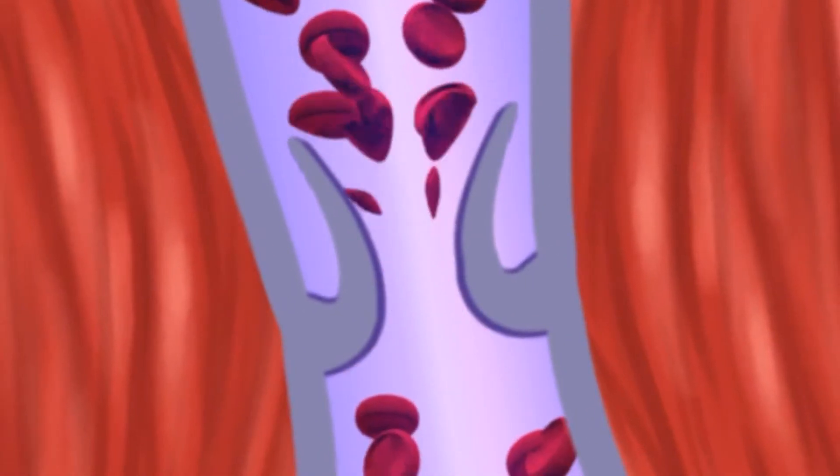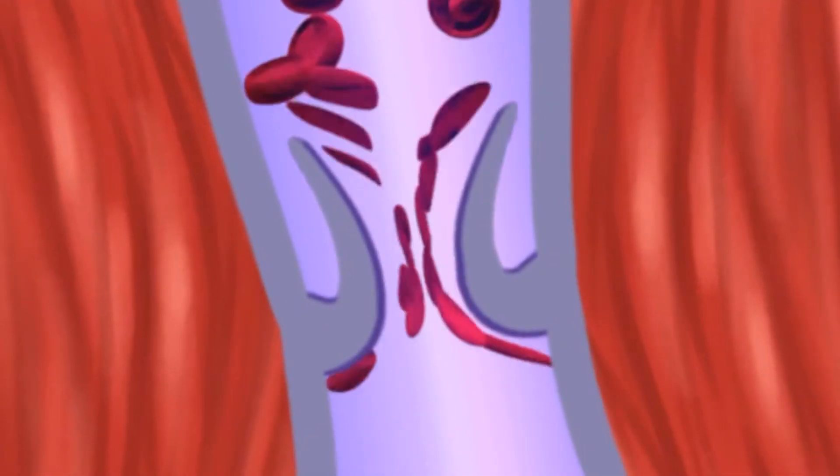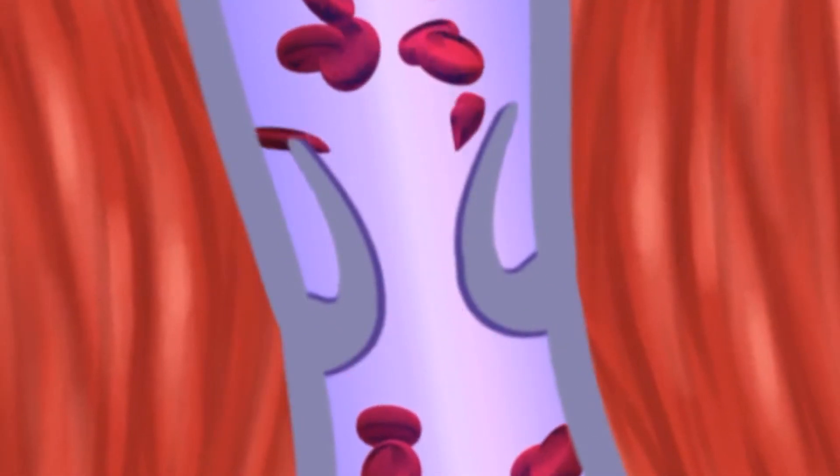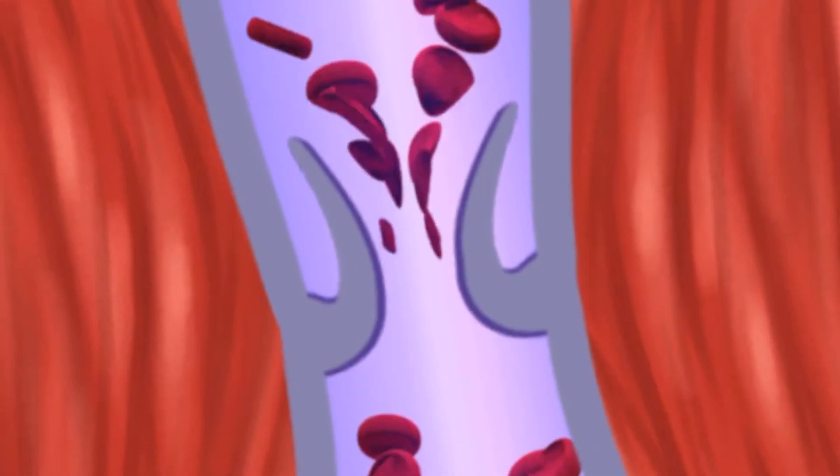Contractions of these muscles when you move your legs and ankles help to squeeze the blood back up towards the heart. Veins also have valves which prevent the blood from flowing back toward the feet.